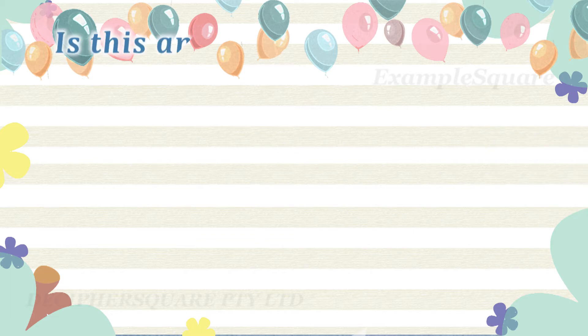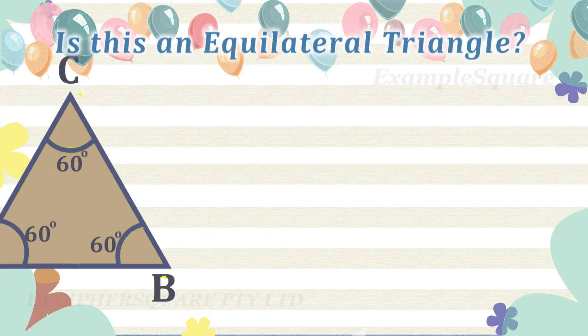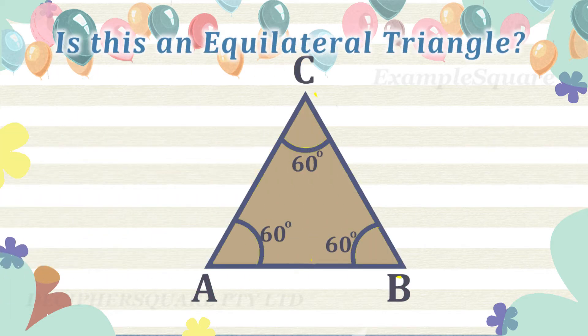Is this an equilateral triangle? Yes, this is an example of an equilateral triangle as all three interior angles shown are equal, and so all three sides are also equal.